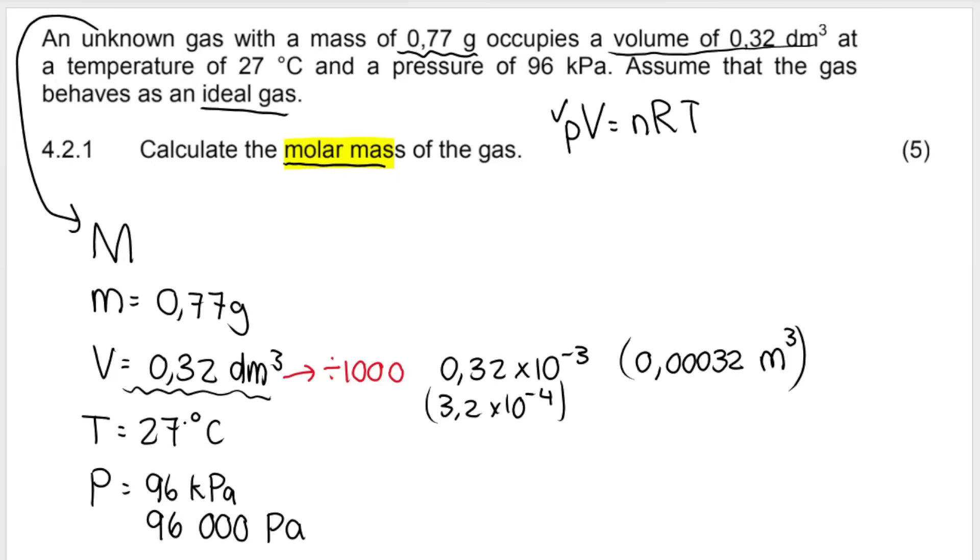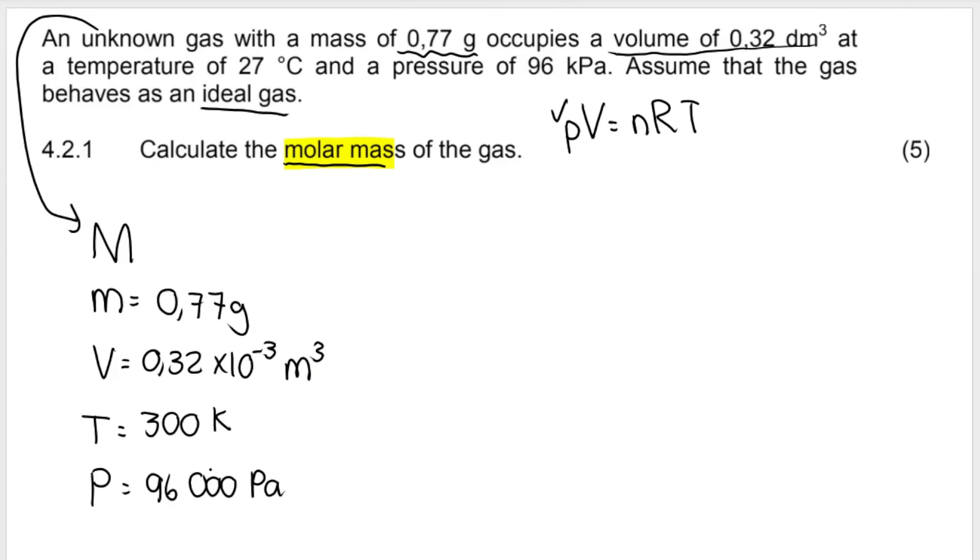Then we must convert from degrees Celsius to Kelvin. Remember we add 273. So we get 300 Kelvin. Now that we've converted all of our units properly, there we go, there's the correct conversions. Now we can substitute into my formula. So you write your blank formula first, you get a mark for doing that. Then you substitute in your variable. So in the place of pressure, we put 96,000. In the place of volume, we put 0.32 times 10 to the negative 3. N is what I'm looking for. R is 8.31 and temperature is 300.